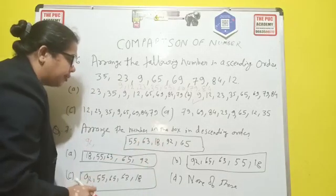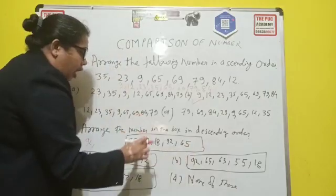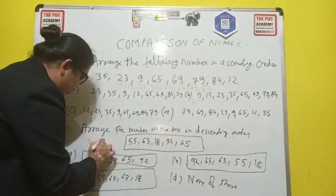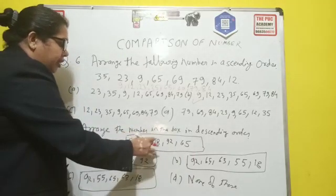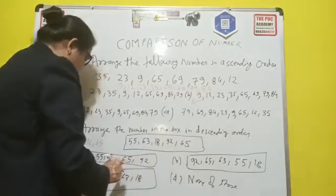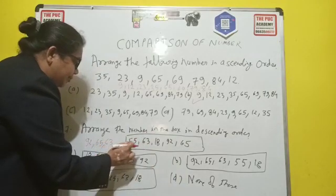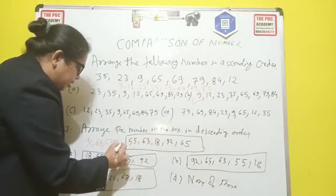Then we have next number bigger is, there are 63 and 65. So out of 63 and 65 we have to choose the big number. So 65 will come because 6 is already same on both the position, but 5 is bigger than the 1st position. And next is your 63 numbers. Next number is 55, and next number is 18.